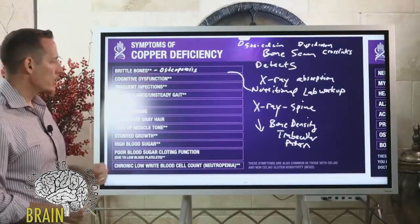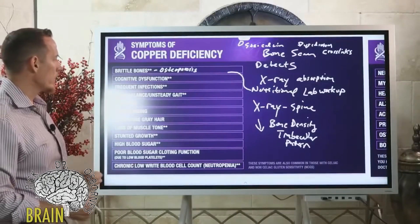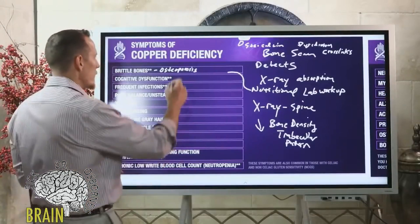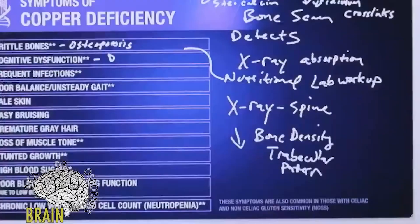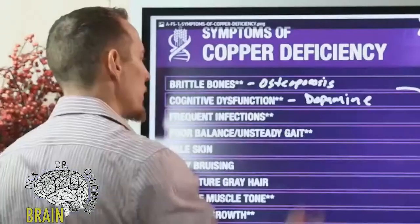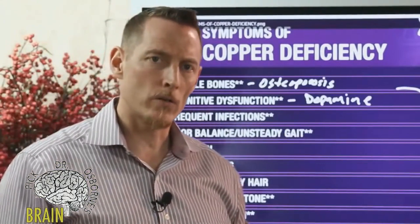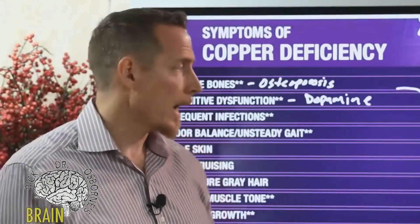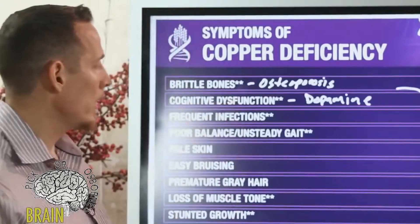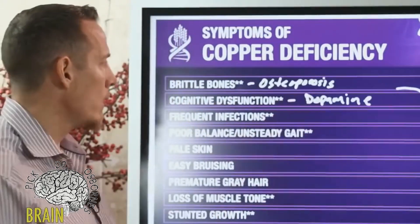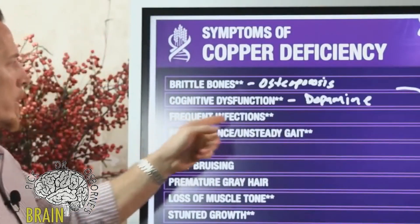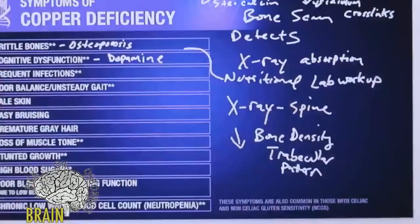Cognitive dysfunction is a symptom of copper deficiency. You need copper to produce dopamine, which is a primary neurotransmitter that your nerves use to communicate with each other, as is adrenaline. So cognitive decline or cognitive dysfunction relates back to dopamine being very important. Frequent infections are also a symptom — people with low copper generally tend to have low neutrophils.